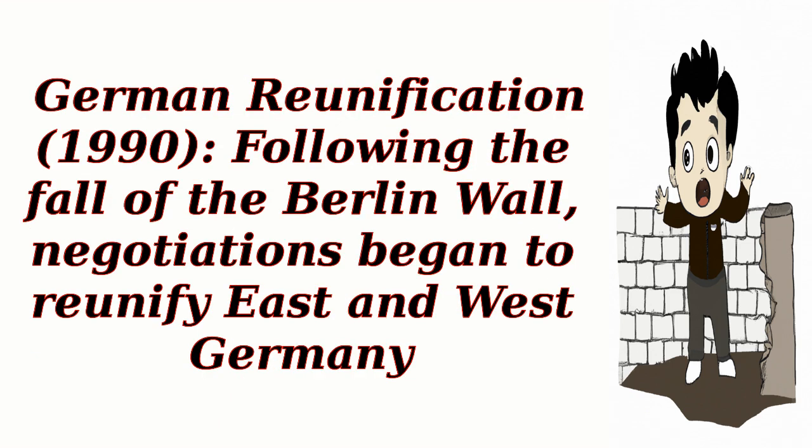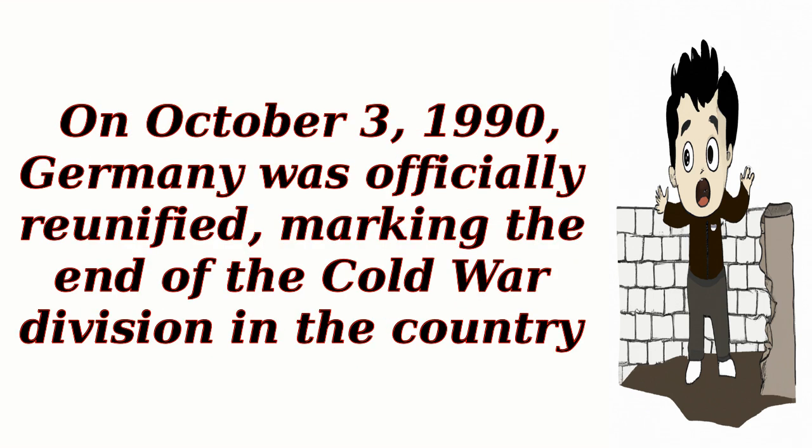German Reunification, 1990: Following the fall of the Berlin Wall, negotiations began to reunify East and West Germany. On October 3, 1990, Germany was officially reunified, marking the end of the Cold War division in the country.